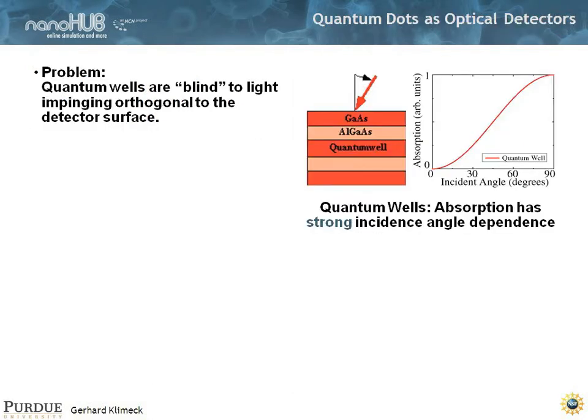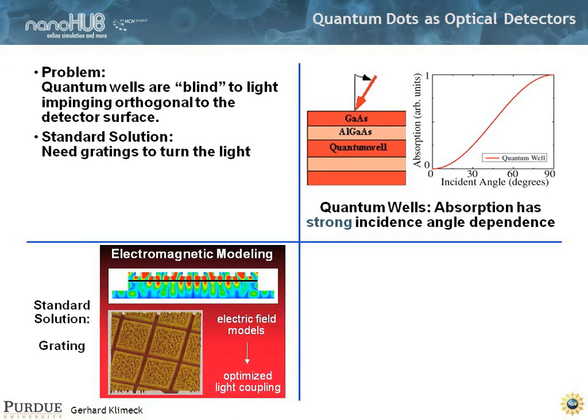To highlight this point a little bit more, that was what JPL was quite interested in when I was there. Basically quantum wells are blind to light coming in that is orthogonal. They cannot detect it. You have to turn the light around. And typically people design gratings on top, or put lenses on top, to change the electric field and turn it around by 90 degrees. And that gives you absorption of light in a quantum well.